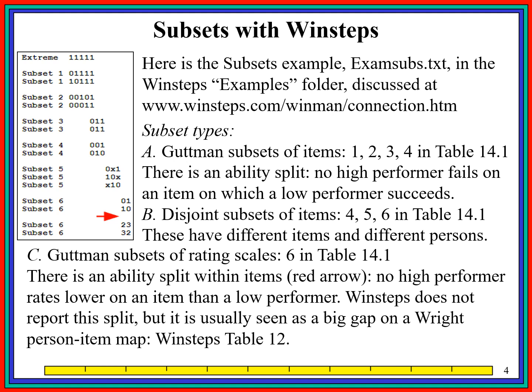There's also what's called Guttman subsets. This is subset type A, where the two people in subset 1 succeed on items on which the two people in subset 2 fail. There's never a situation where a person in subset 2 succeeds where a person in subset 1 fails. In other words, there's a split in the data between high and low performers, and these data cannot tell us how far apart the two groups are. We need someone to succeed and someone to fail in both subsets to connect up the subsets.